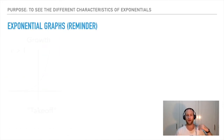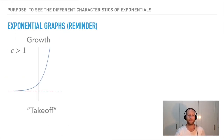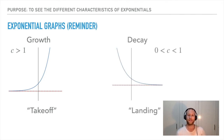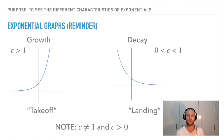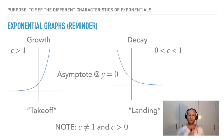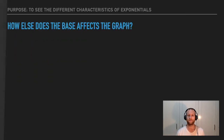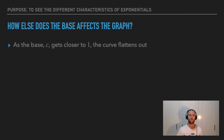As a reminder, we've got two types of exponential graphs: growth where c is greater than one, and decay where c is between zero and one. C cannot equal one and it has to be greater than zero — no negatives. We've got asymptotes at y equals zero, meaning my graph gets really close to that point but never actually touches it. How else does the base affect the graph?